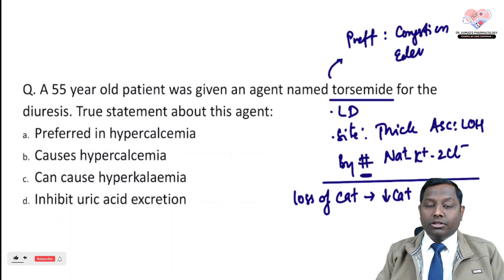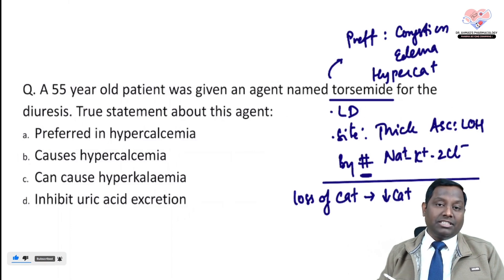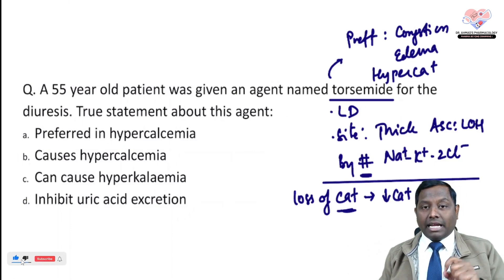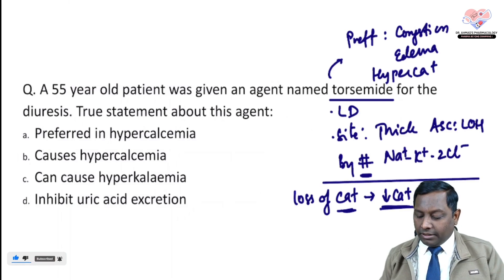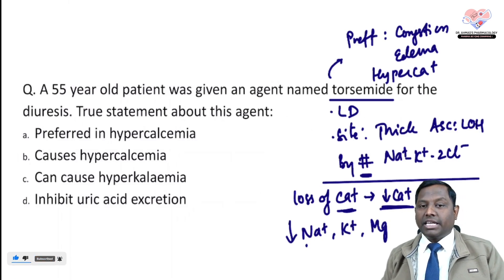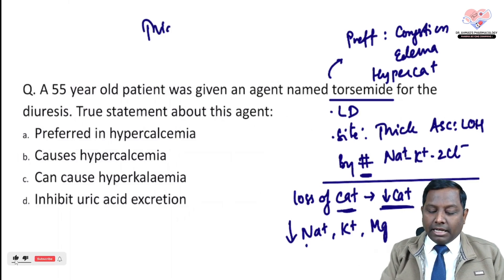Loop diuretics can also be used in the treatment of hypercalcemia. Calcium is not the only electrolyte that decreases — they also cause loss of sodium, potassium, and magnesium. So, loop diuretics lose calcium. Remember: 'loop loses calcium.'